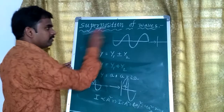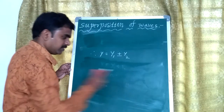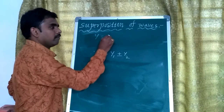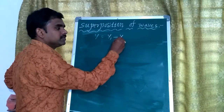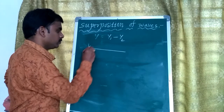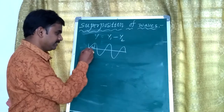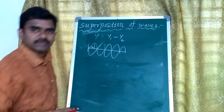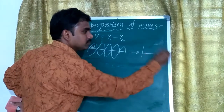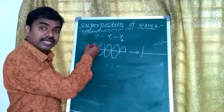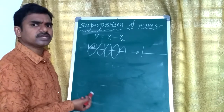If the first wave is traveling in one direction and the other wave is traveling in the opposite direction, then we take Y equals Y1 minus Y2. If the amplitudes are the same, we can get zero intensity. If the amplitudes are not the same, we can get minimum intensity.